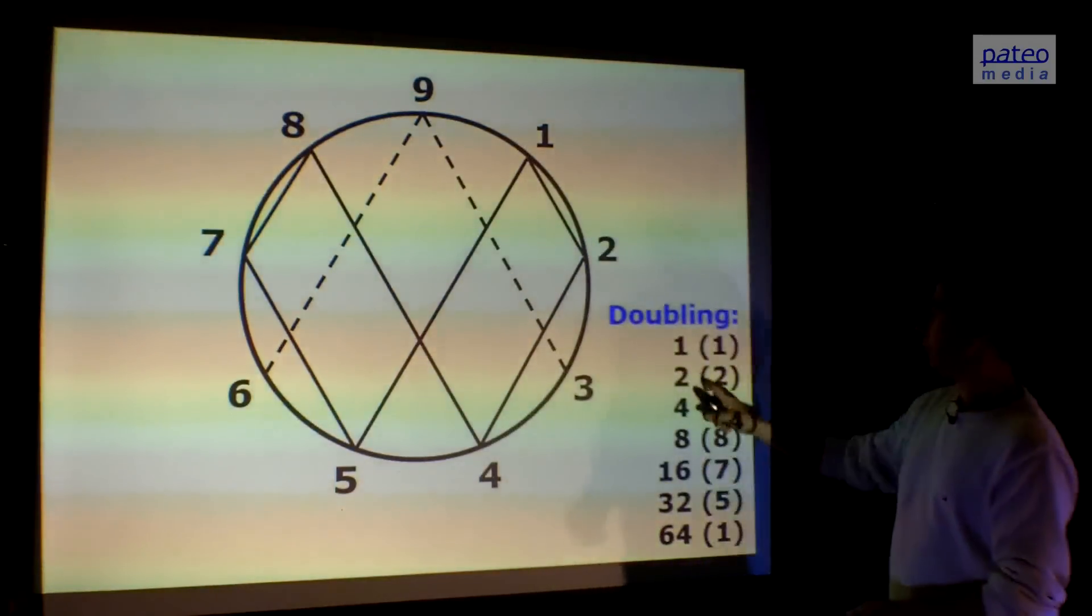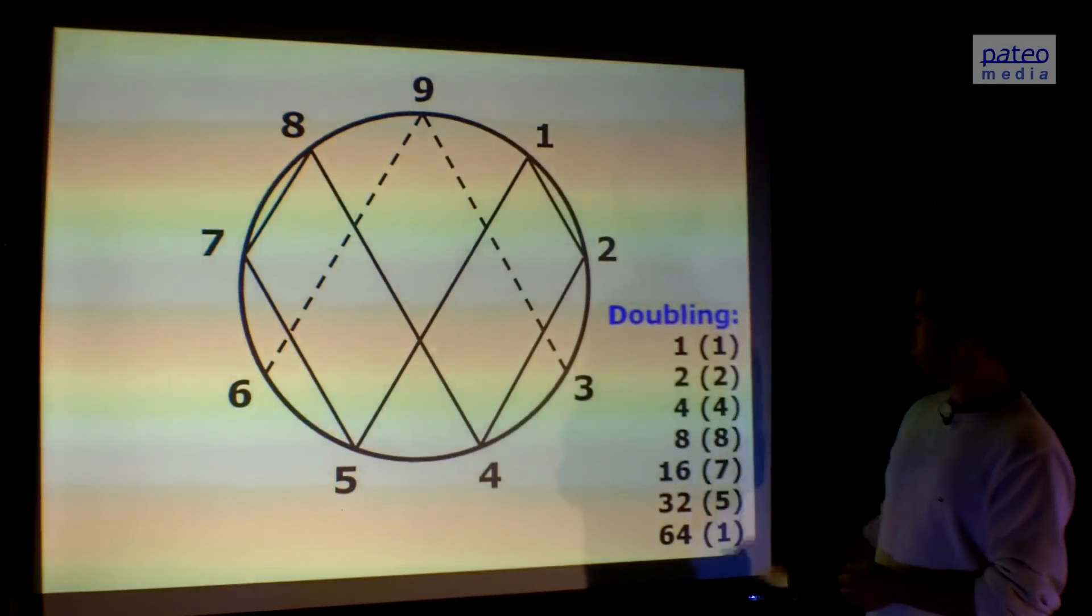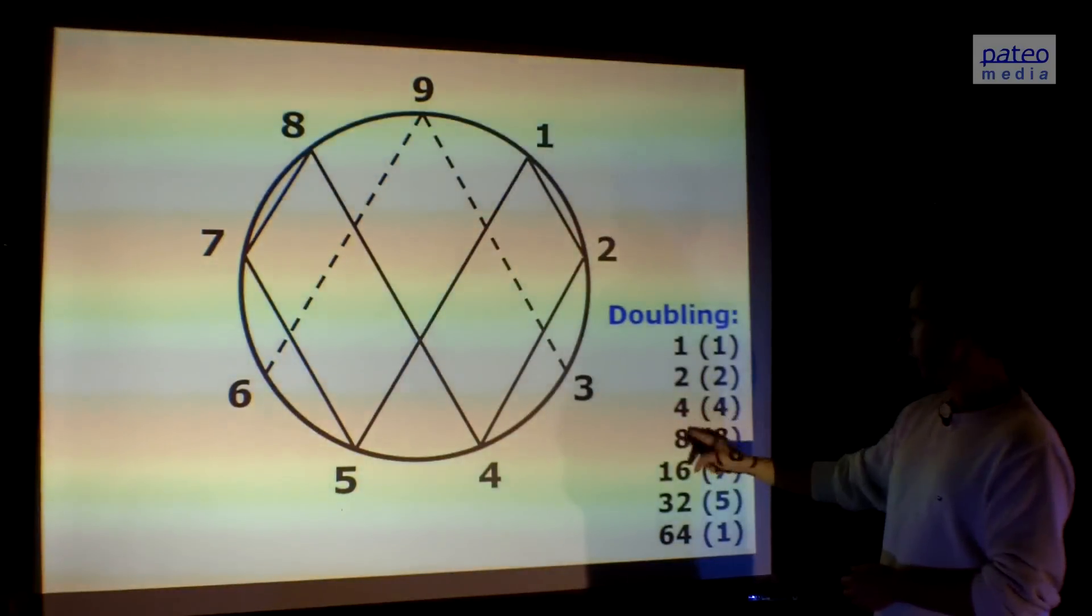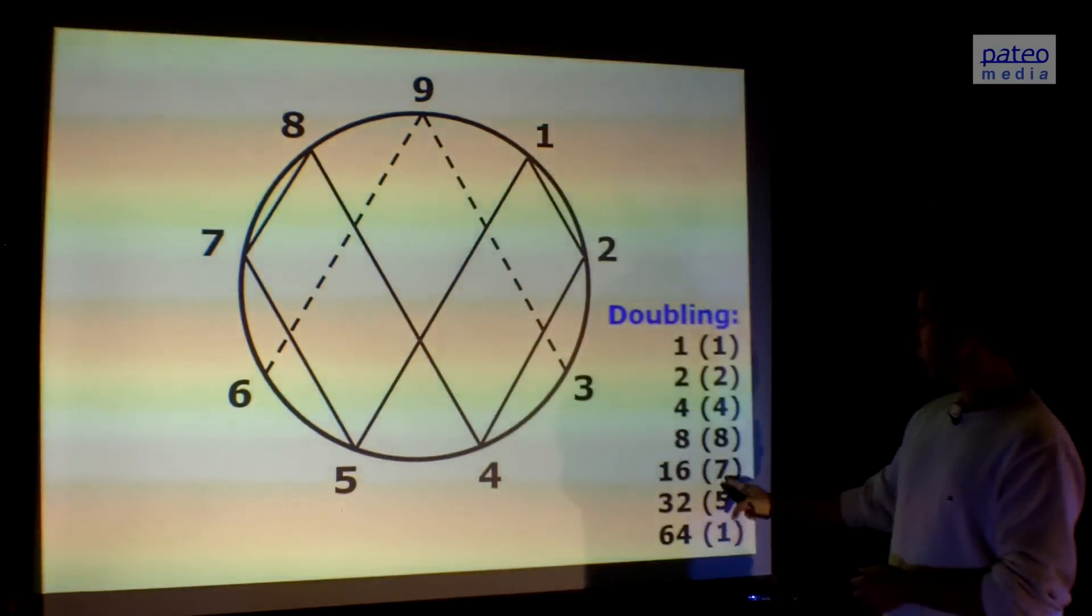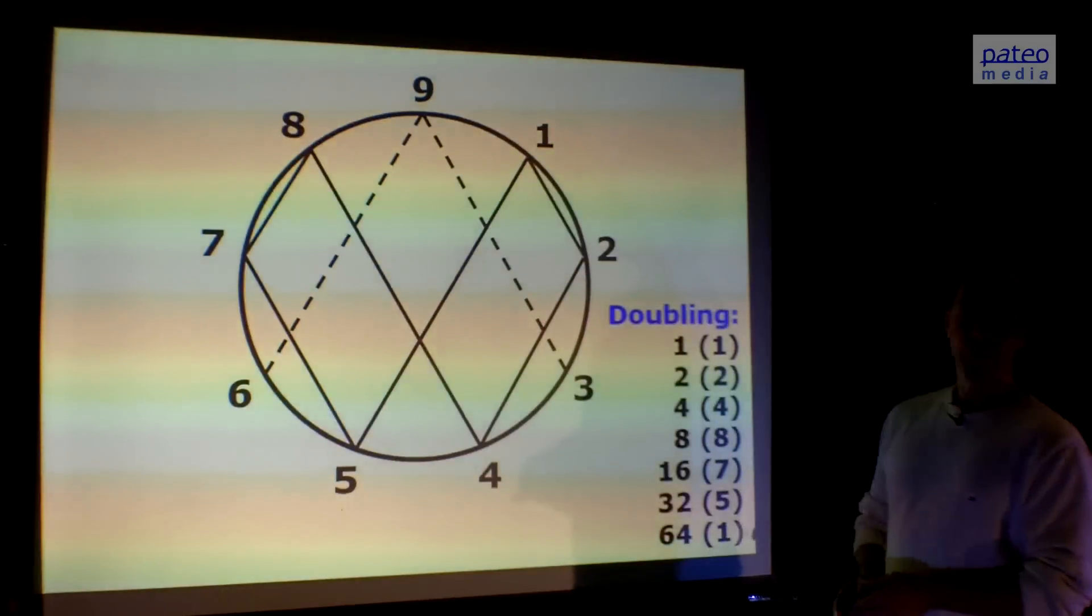Here is a doubling sequence. If you double 1, you get 2. If you double 2, you get 4. If you double 4, you get 8. Then you get 16, which is 7. Then 32, which is 5. And then 64, which is 1 again.